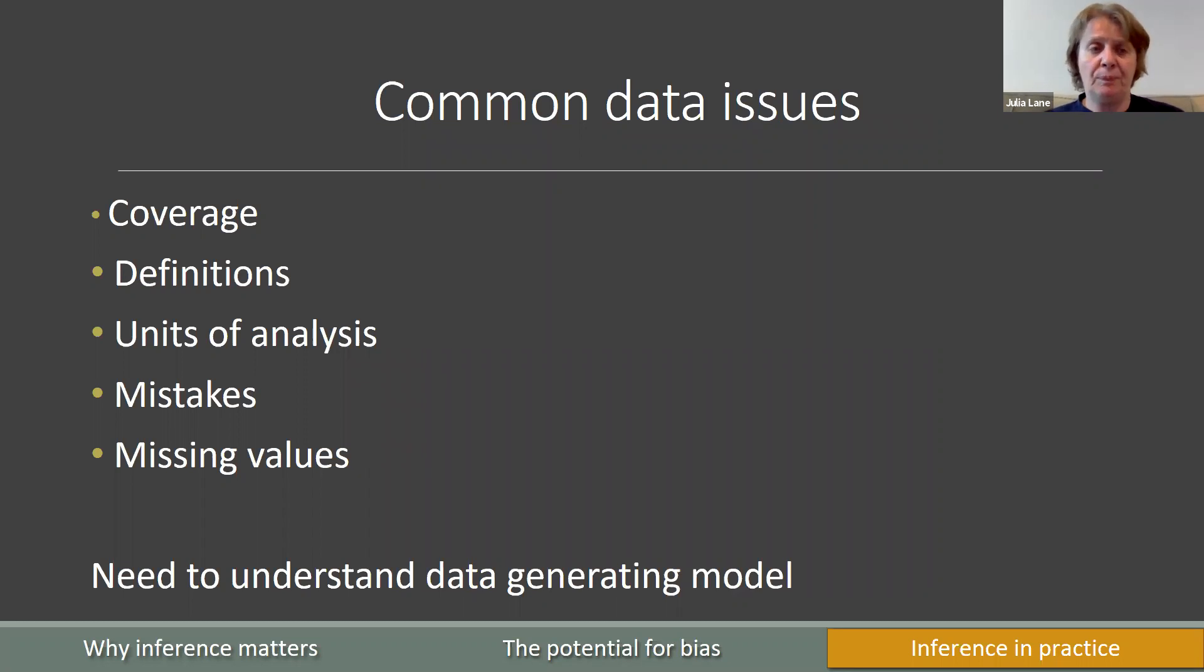So, what are the common data issues? So, with the Harry Truman example, the issue was coverage. In other words, does the population on which you're collecting the data match the population of interest? Another issue is definitions. How do we code in information about what a university professor is? Sometimes, the units of analysis might not exactly match the units of analysis of interest.